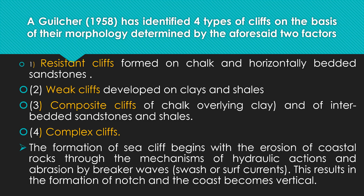The cliff is formed on a rock and a bedded sandstone. If you have a cliff, it is formed on a rock and a bedded sandstone. The cliff is also developed on clay and shale, forming a weak cliff. Composite cliff is another type.